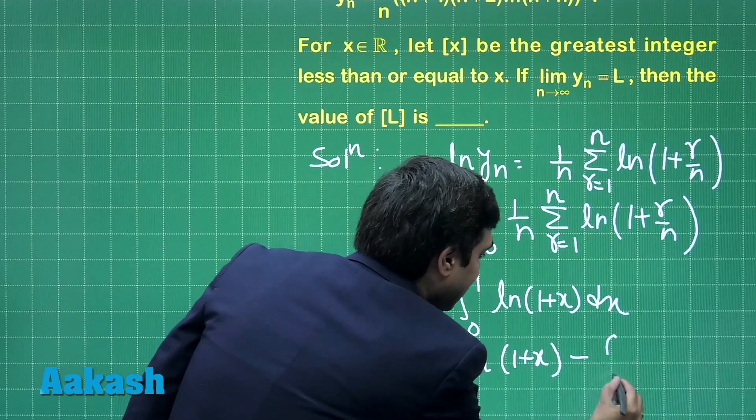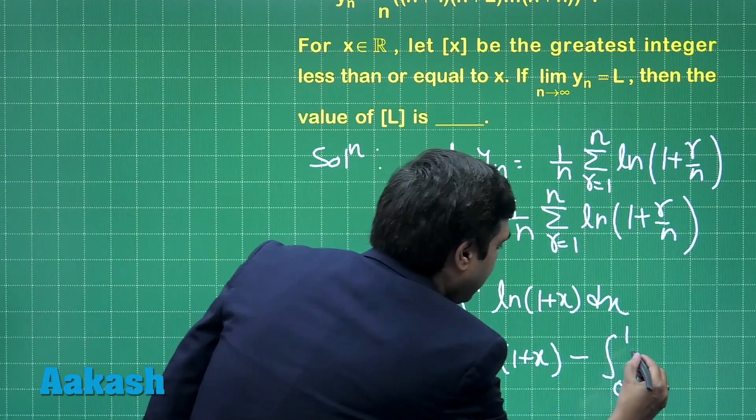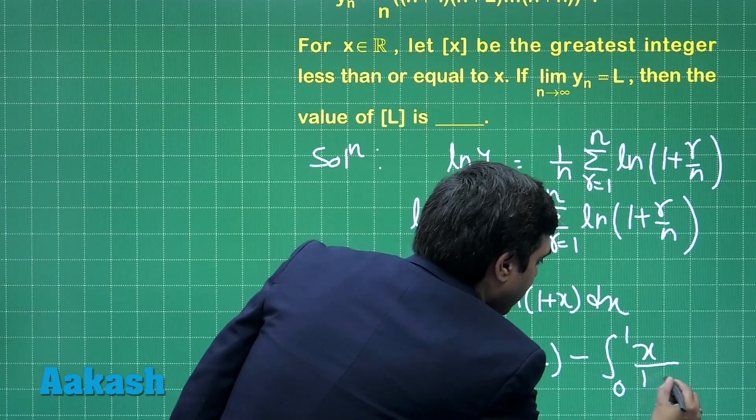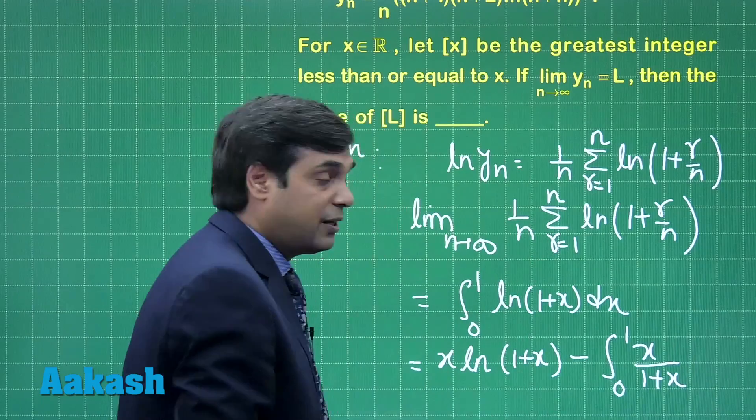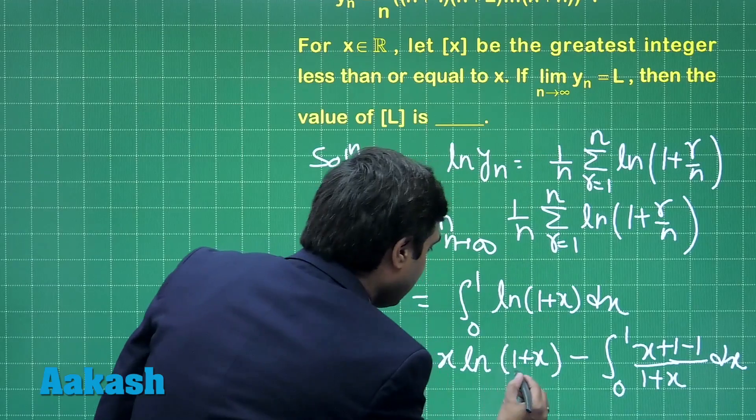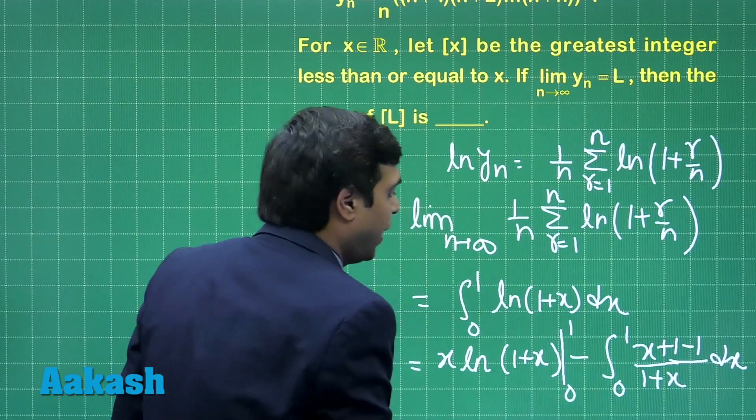Minus integral 0 to 1, x upon 1 plus x. Right, plus 1 minus 1, plus 1 minus 1, so that it can be integrated further. Here put the limit 0 to 1.